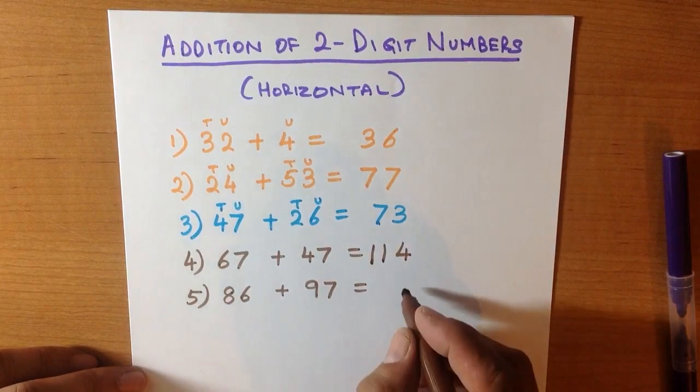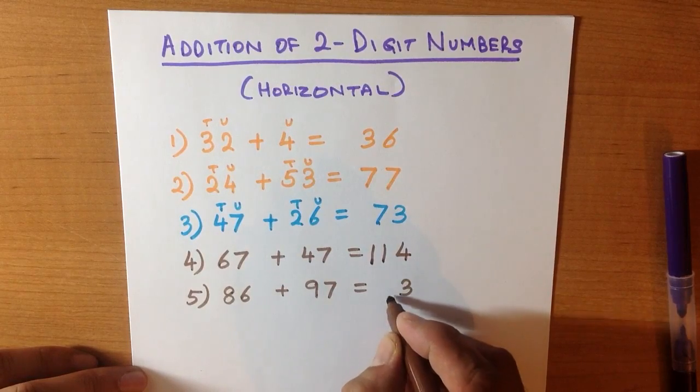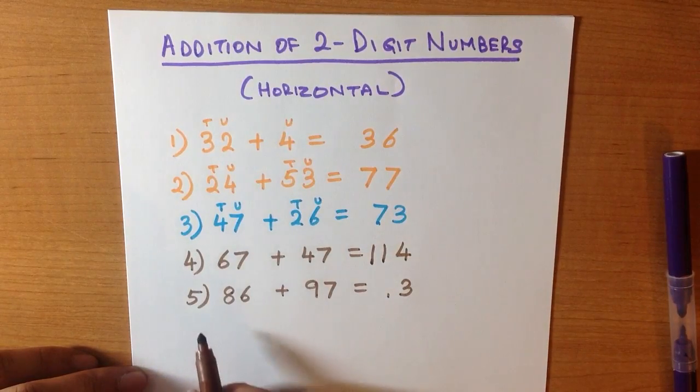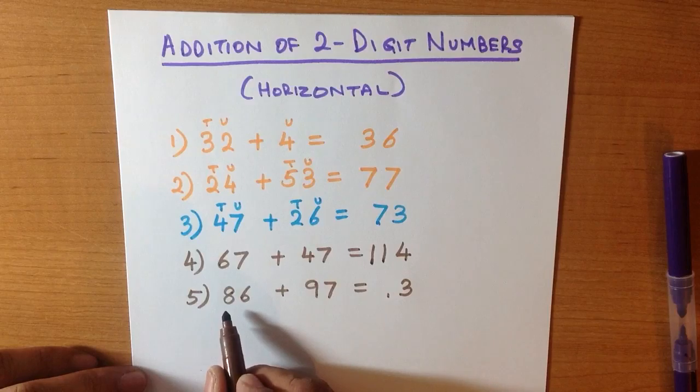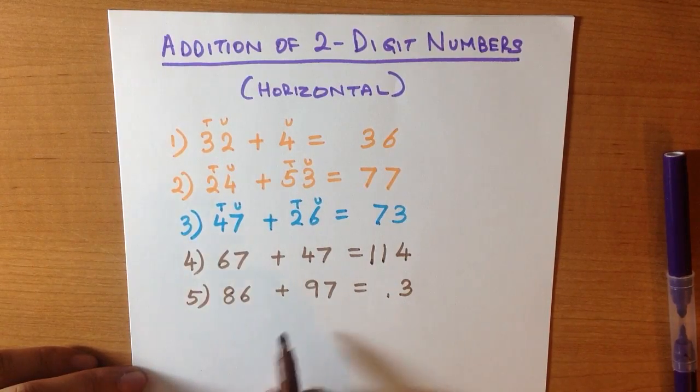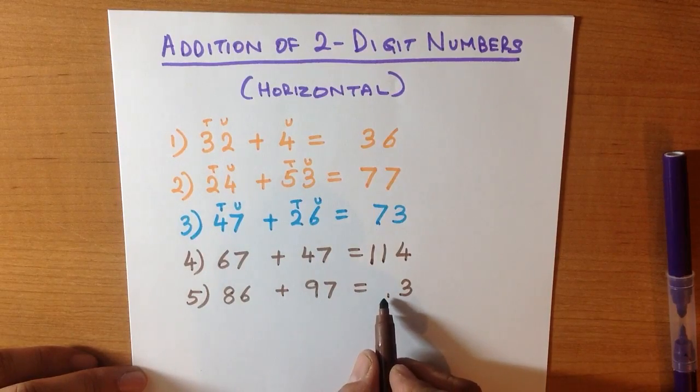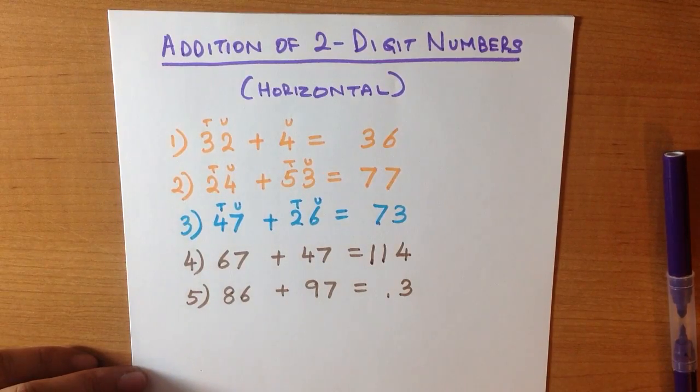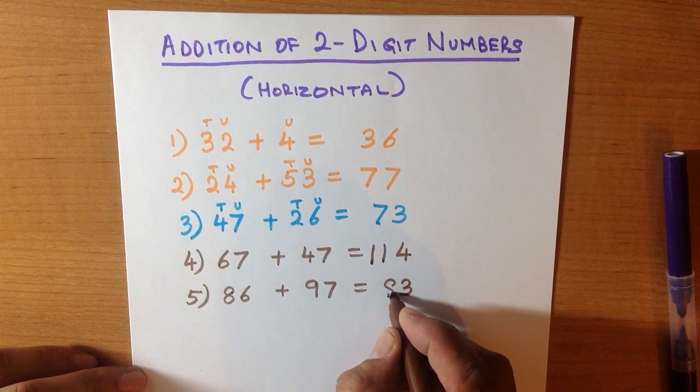6 plus 7 is 13. Now we will add the tens. What is 8 plus 9 plus 1? Well, we know that 9 plus 1 is 10, plus the 8 is 18.